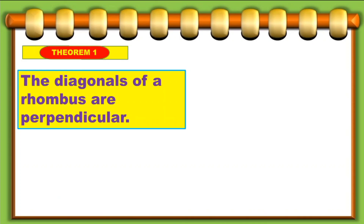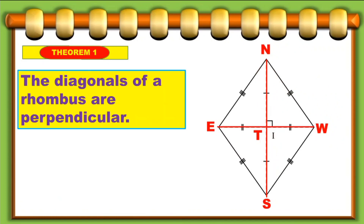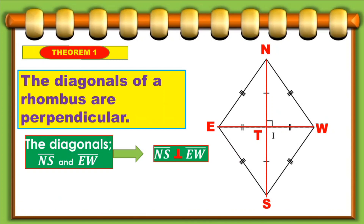Theorem one states that the diagonals of a rhombus are perpendicular. Here we have an illustration — a rhombus NESW with segment NS and segment EW as the diagonals. Diagonal NS is perpendicular to diagonal EW.